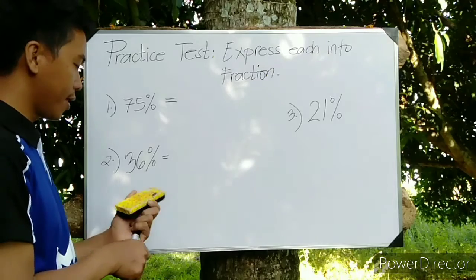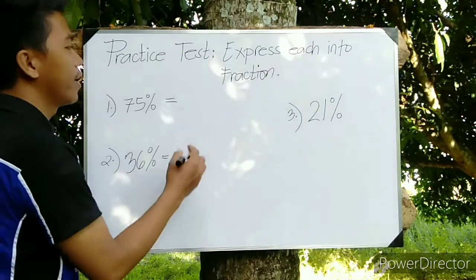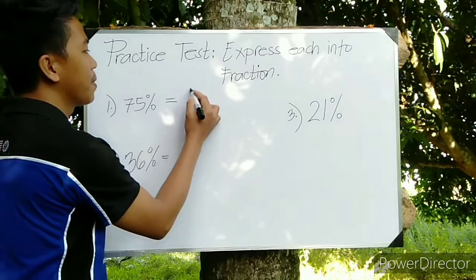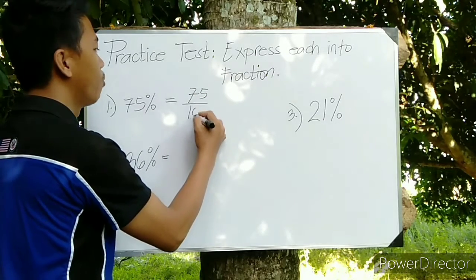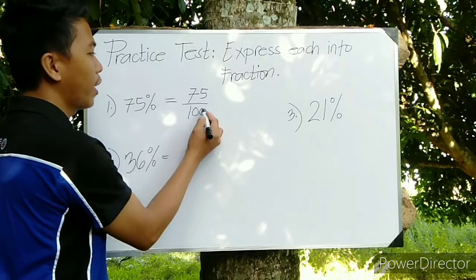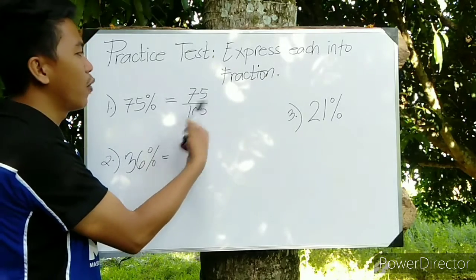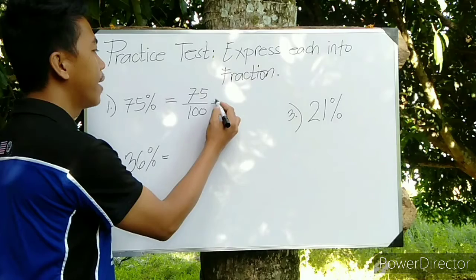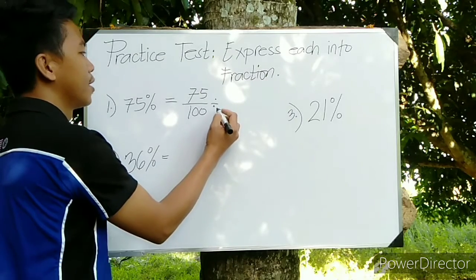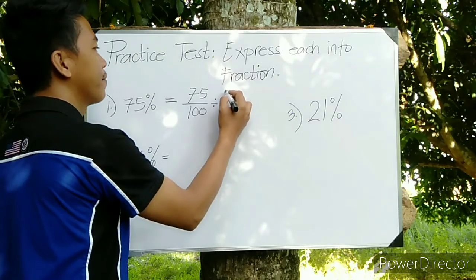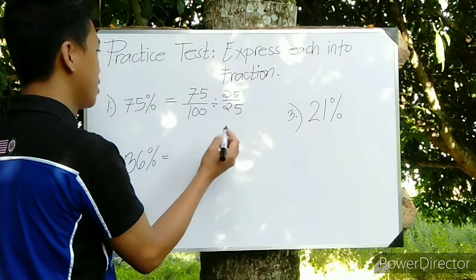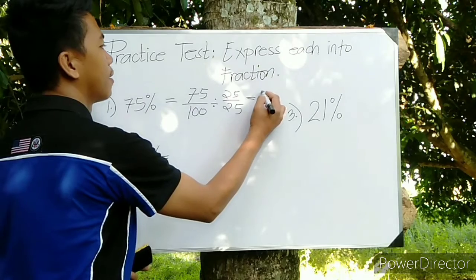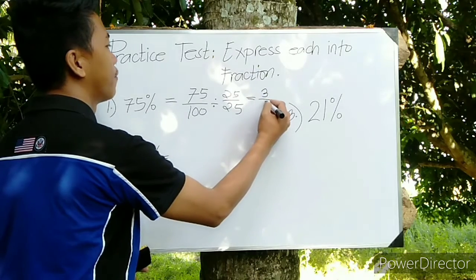Just follow the rule by changing percent into fraction. Let's divide it by 100. So we have 75% which means 75 over 100, and then we can still reduce this fraction form into lowest term by dividing 25 over 25. The final answer is 3 over 4.